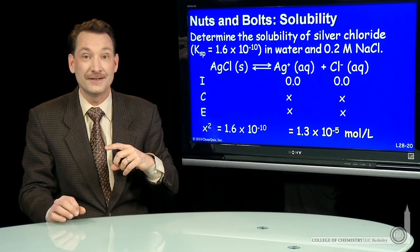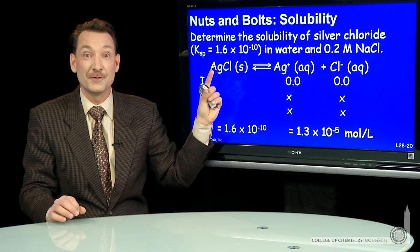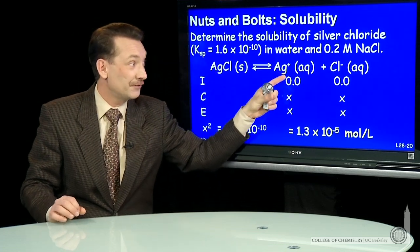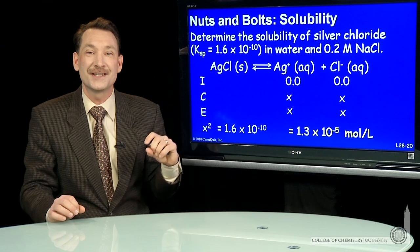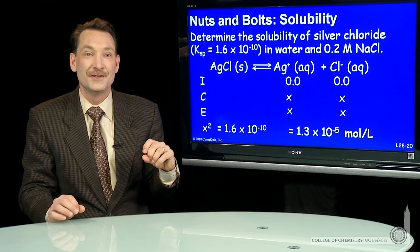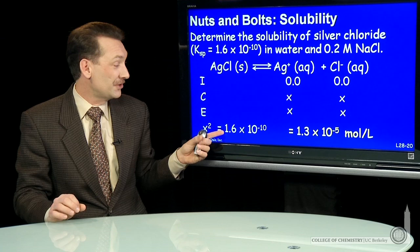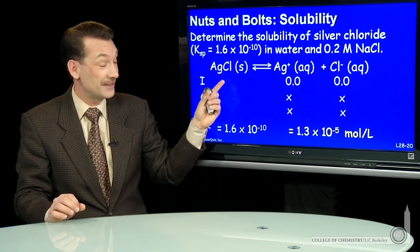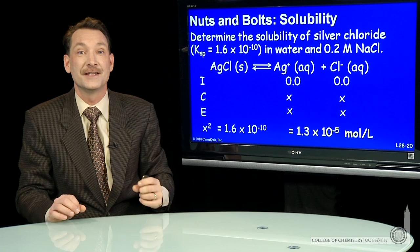Doesn't matter if I put more solid silver chloride in the flask. The equilibrium has been reached, and the product of the silver ions and the chlorine ions always has to be 1.6 times 10 to the minus tenth. So adding more silver chloride does not affect the concentration of silver ions and chloride ions in solution.